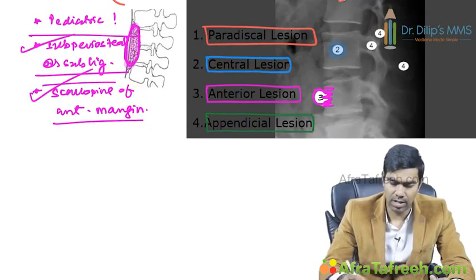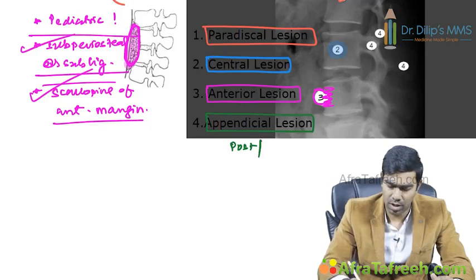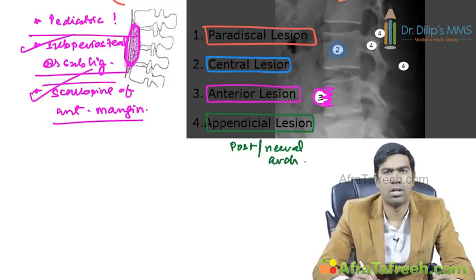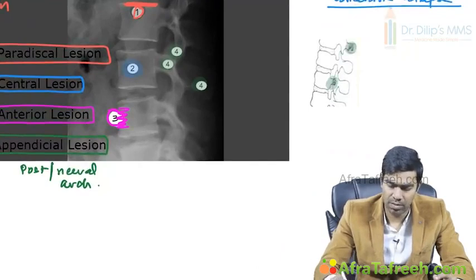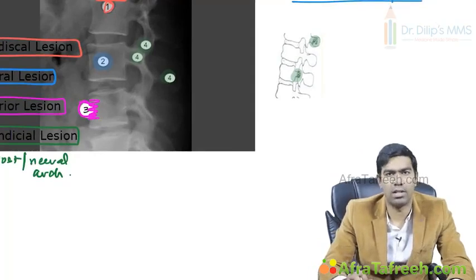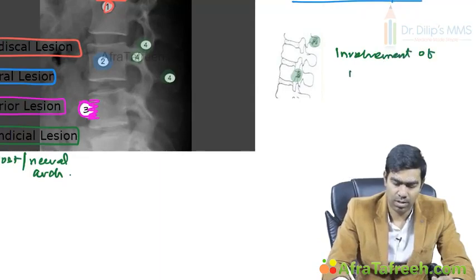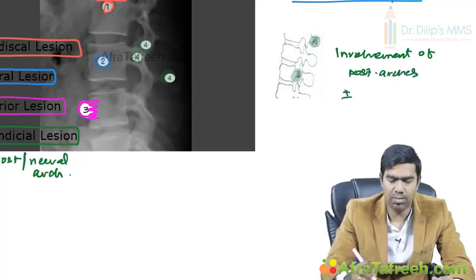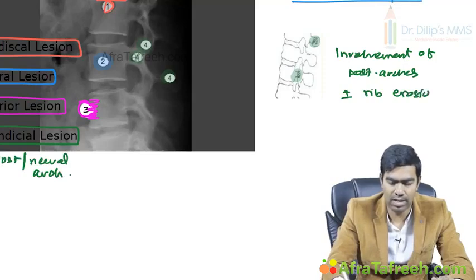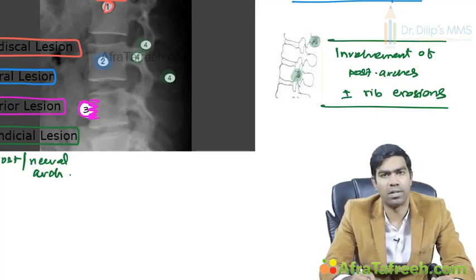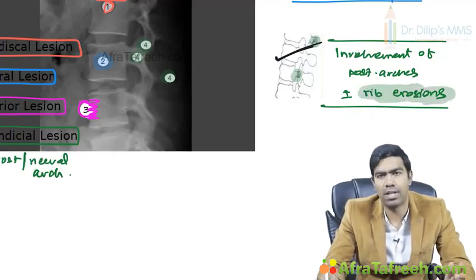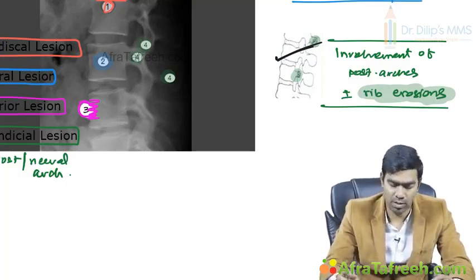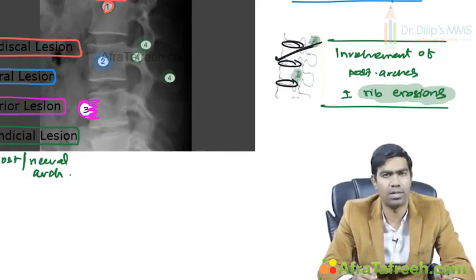Type 4 is the appendicial lesion, also called posterior or neural arch type. It involves the posterior arches plus or minus adjacent rib erosions - the adjacent ribs will be eroded, which is a defining feature. The disc space is preserved - absolutely no problem with the disc space. This type may also develop paravertebral abscess, but rib erosions and preserved disc space are the defining characteristics.